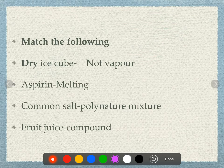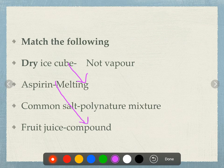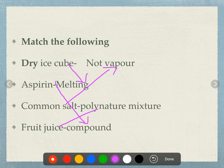Classify the following: dry ice cube, aspirin, common salt, fruit juice. Dry ice cube — it melts; aspirin — compound; common salt — not a vapor; fruit juice — a poly-nature mixture.